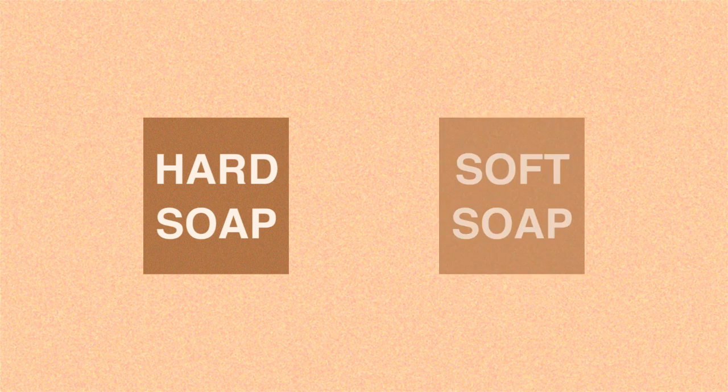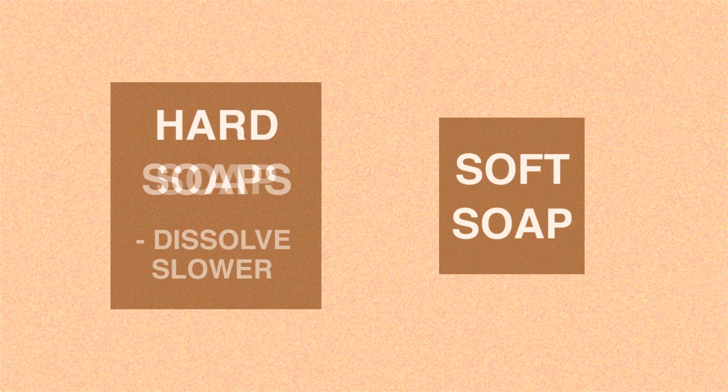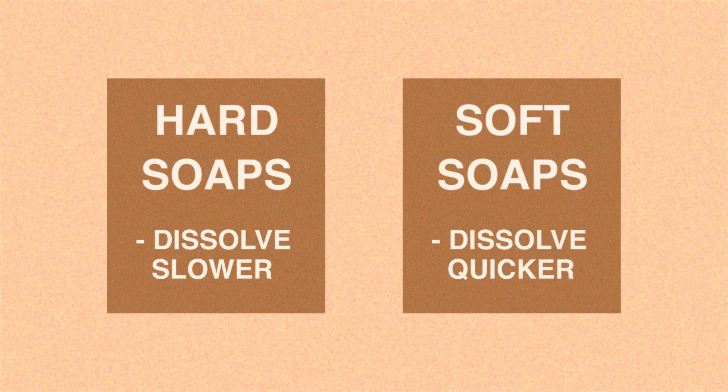Soaps can be hard, meaning they can be moulded into shapes — typically a bar — or they can be soft, like those found in hand washes which are liquefied and kept in bottles. Hard soaps dissolve more slowly whereas soft soaps dissolve more quickly.